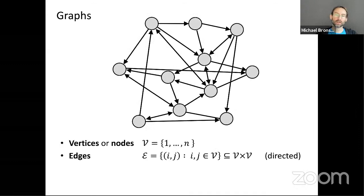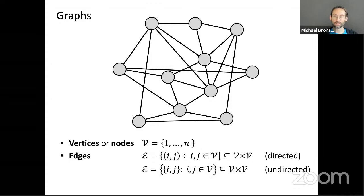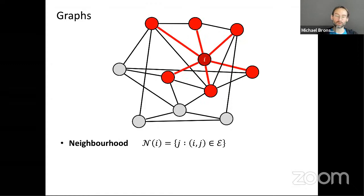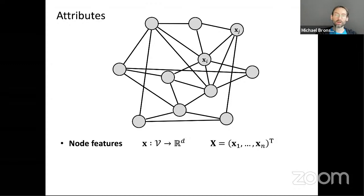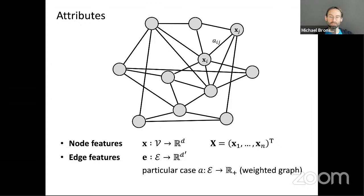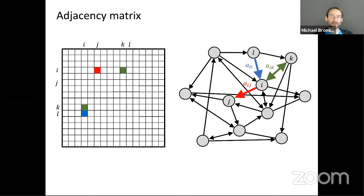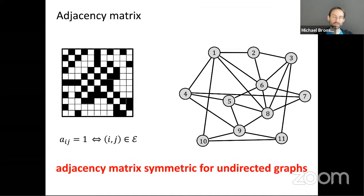Now we move from grids to graphs. A graph is a collection of nodes and edges — edges can be directed or undirected. The neighborhood of a node consists of all nodes connected by an edge, and the degree is the size of the neighborhood. We work with attributed graphs, where node features of dimension D are organized in a matrix X of size n × d. We can also have edge features represented as non-negative weights. The graph structure is represented by an adjacency matrix where position (i,j) contains the edge weight and zero otherwise. For undirected graphs, the adjacency matrix is symmetric.